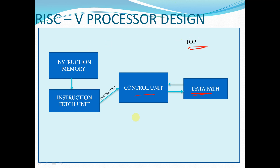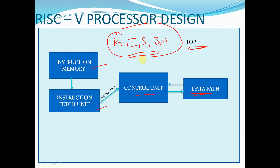The top module consists of the following modules: instruction memory, instruction fetch unit, control unit, and data path. In the instruction memory, all the instructions we have discussed in previous sessions — R type, I type, S type, B type, U type — all these instructions have been written in binary format. I will show those instructions also. All those instructions will be stored by default in each memory location.